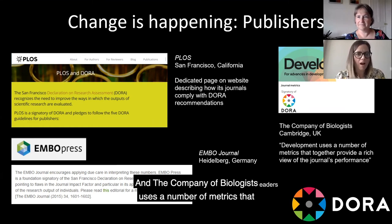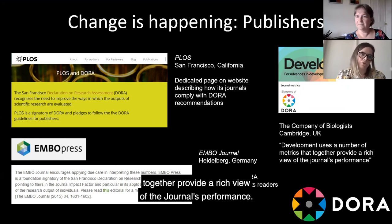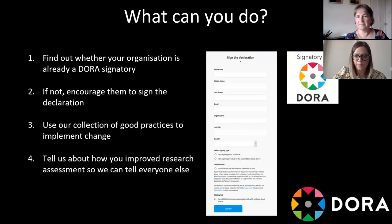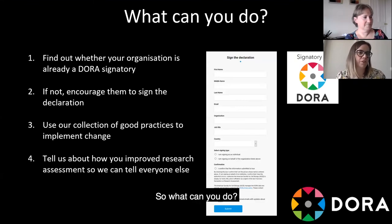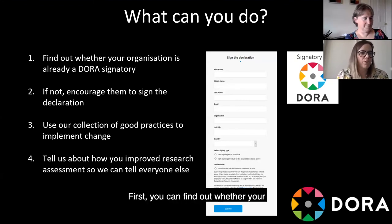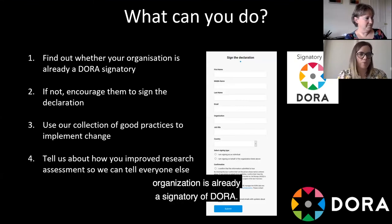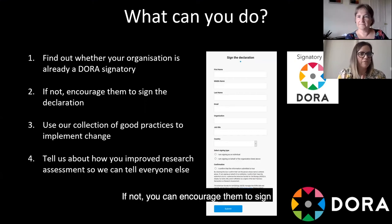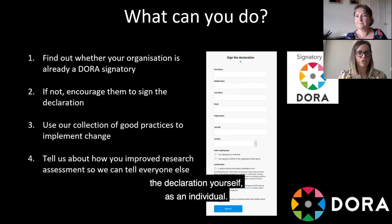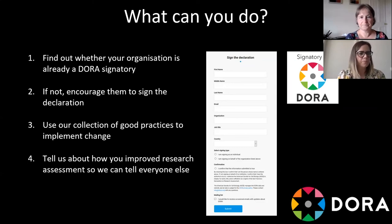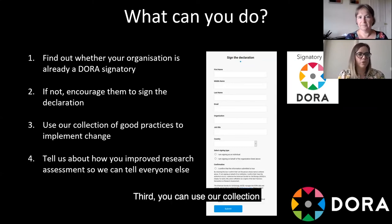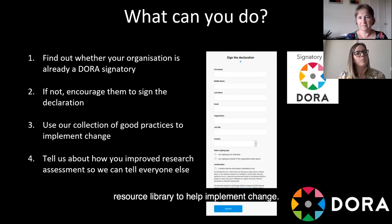The Company of Biologists uses a number of metrics that together provide a rich view of the journal's performance. So what can you do? First, you can find out whether your organization is already a signatory of DORA. If not, you can encourage them to sign the declaration, and you can also sign the declaration yourself as an individual. Third, you can use our collection of good practices in DORA's resource library to help implement change.